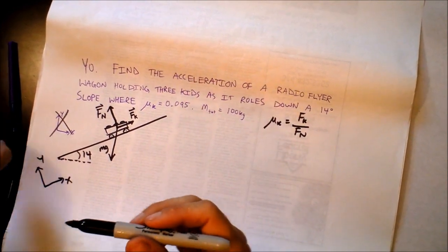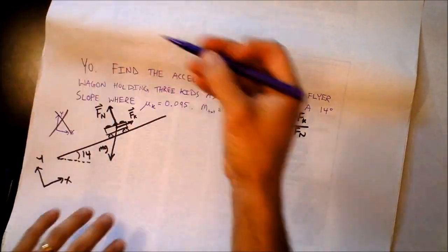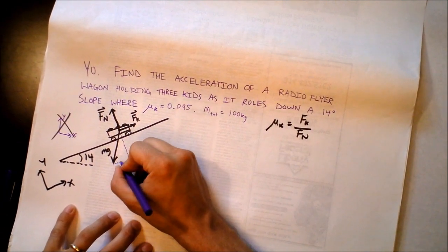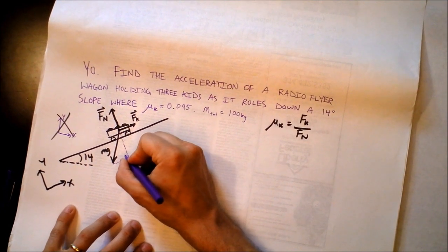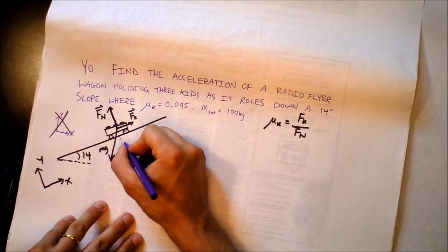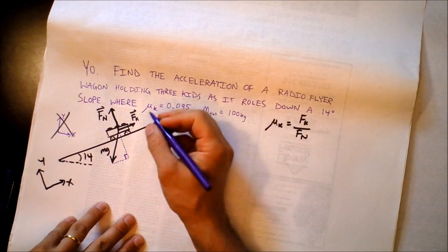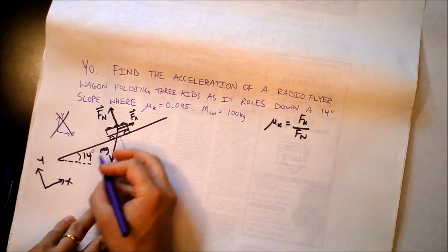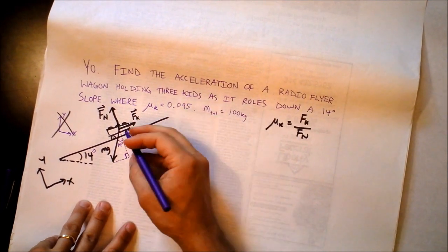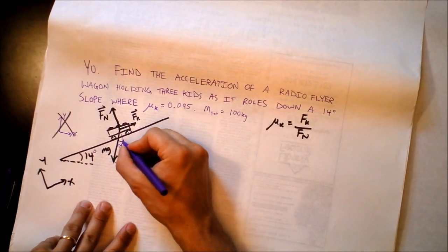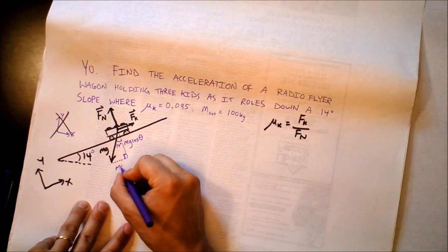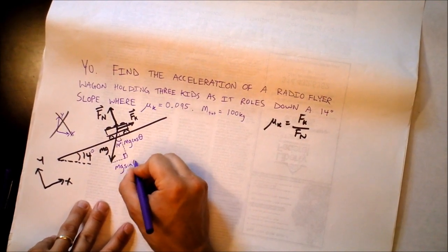So we draw a dotted line in the direction of y and we draw a dotted line in the direction of x. And of course, there's a right angle between x and y. And this is m times g. Is it cosine or is it sine? The question is, where is this angle? 14 degrees. And of course, it's right there. This is the adjacent side. So this will be m times g times cosine of theta. And this will be m times g times sine of theta.